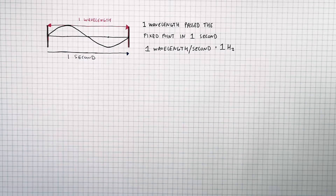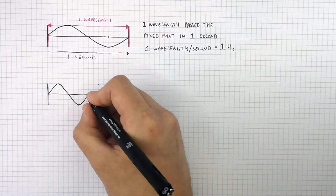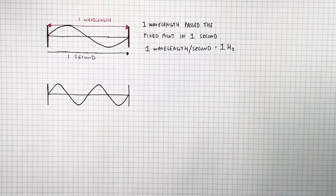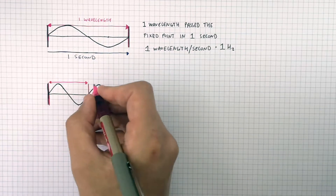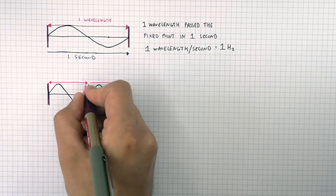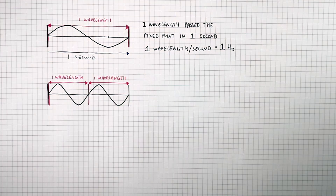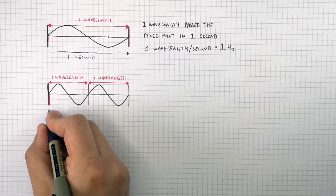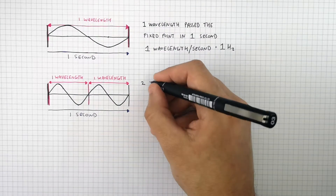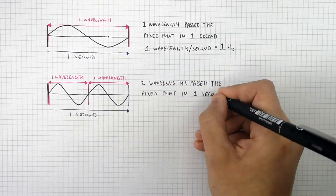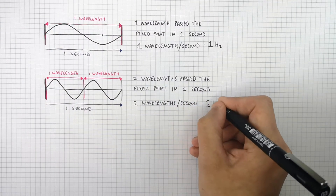The unit of frequency is hertz. In this example we've still got the same fixed point but we've now got two wavelengths passing it. We go from one point of one wave to the next equivalent point on the next wave — that's one wavelength — then to the next equivalent point on the following wave, which is a second wavelength. These two wavelengths pass the fixed point in one second, so the frequency of that wave is two hertz.